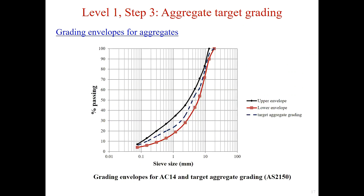When we plot the data in log scale, the horizontal axis is the sieve size in log scale, and the vertical axis is the percentage passing. Here is how the grading envelope looks. According to the previous table, for AC14, we could plot the upper bound and lower bound curves, and normally the target grading falls in between them.